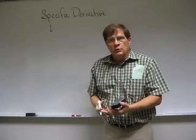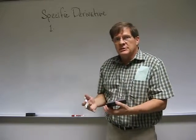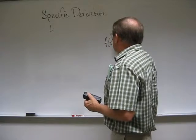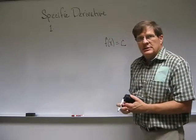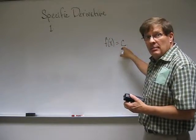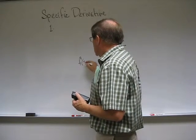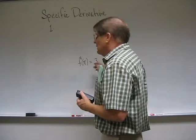The first specific derivative rule looks at the specific function f of x is equal to some constant. For example, the constant might be 3. Let's look at the graph of that as an example. Suppose f of x is equal to 3.